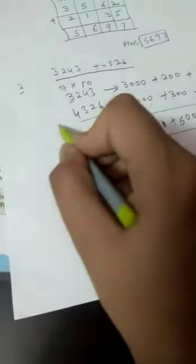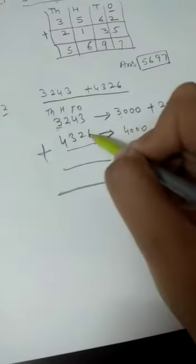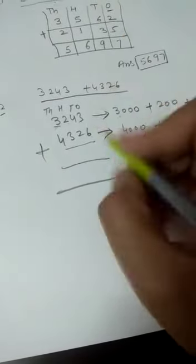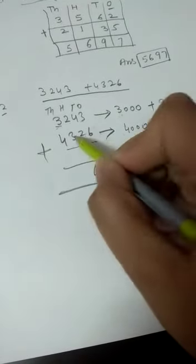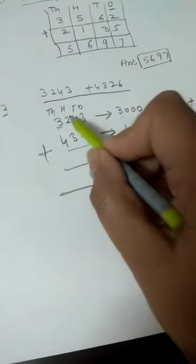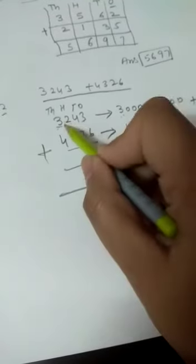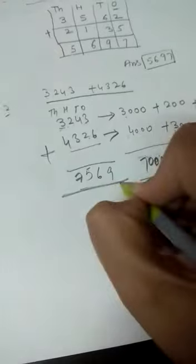Now do from here. Do the addition here. 6 plus 3. 6 is in my mind. 7, 8, and 9. Same way. 4 plus 2, 6. 3 plus 2, 4, 5. 4 and 3, 5, 6, and 7. So 7569. It shows this one.